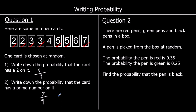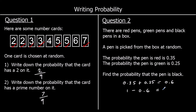Question 2: there are red pens, green pens, and black pens in a box. A pen is picked at random. We're given the probability of red as 0.35 and green as 0.25. All outcomes must add up to 1. 35% plus 25% is 60%, and 100% minus 60% is 40%. So the probability the pen is black is 0.4. It doesn't matter whether you give your answer as a fraction, decimal, or percentage.